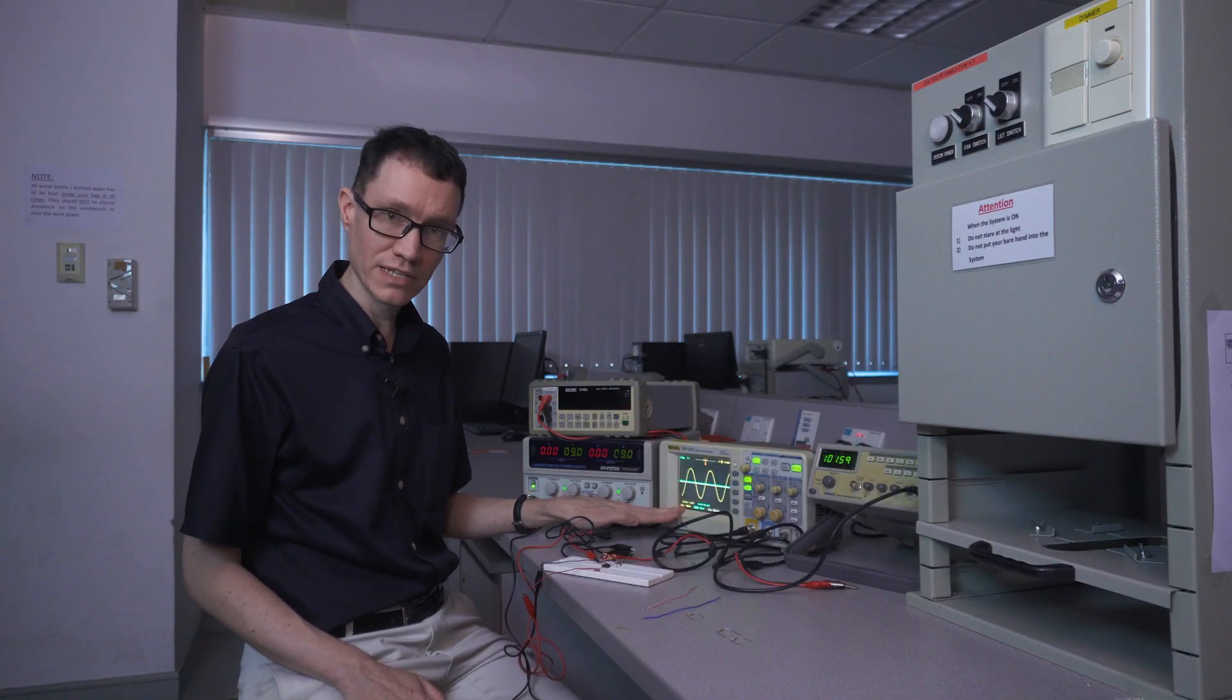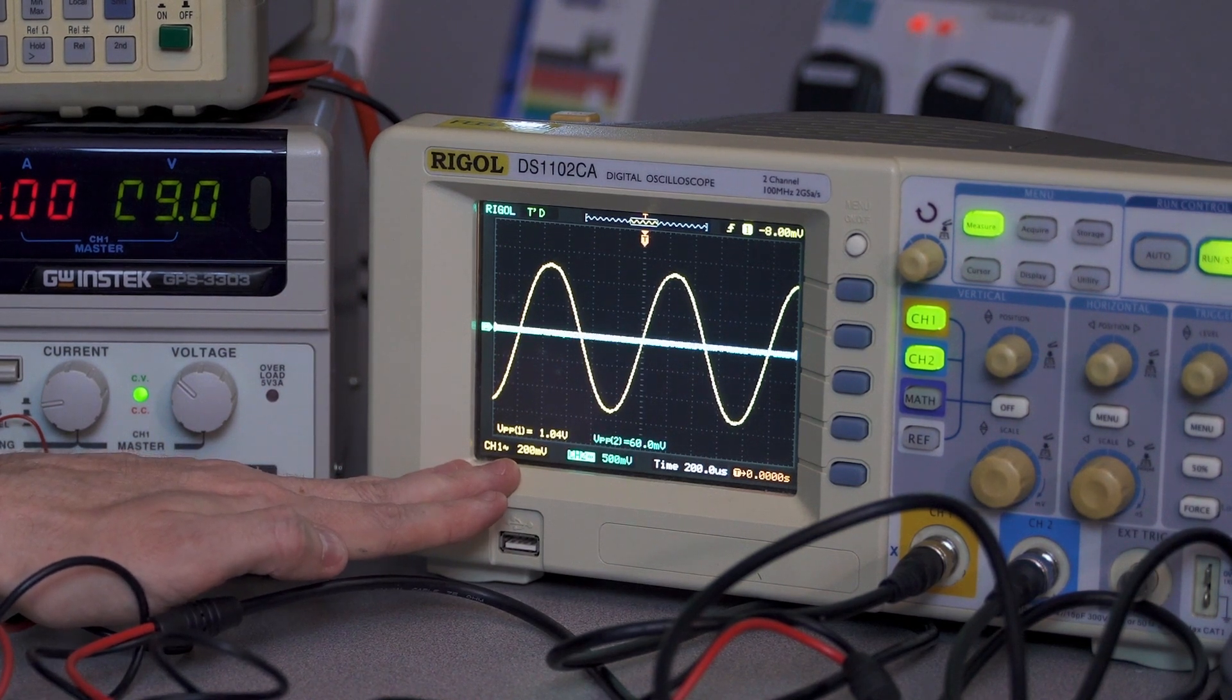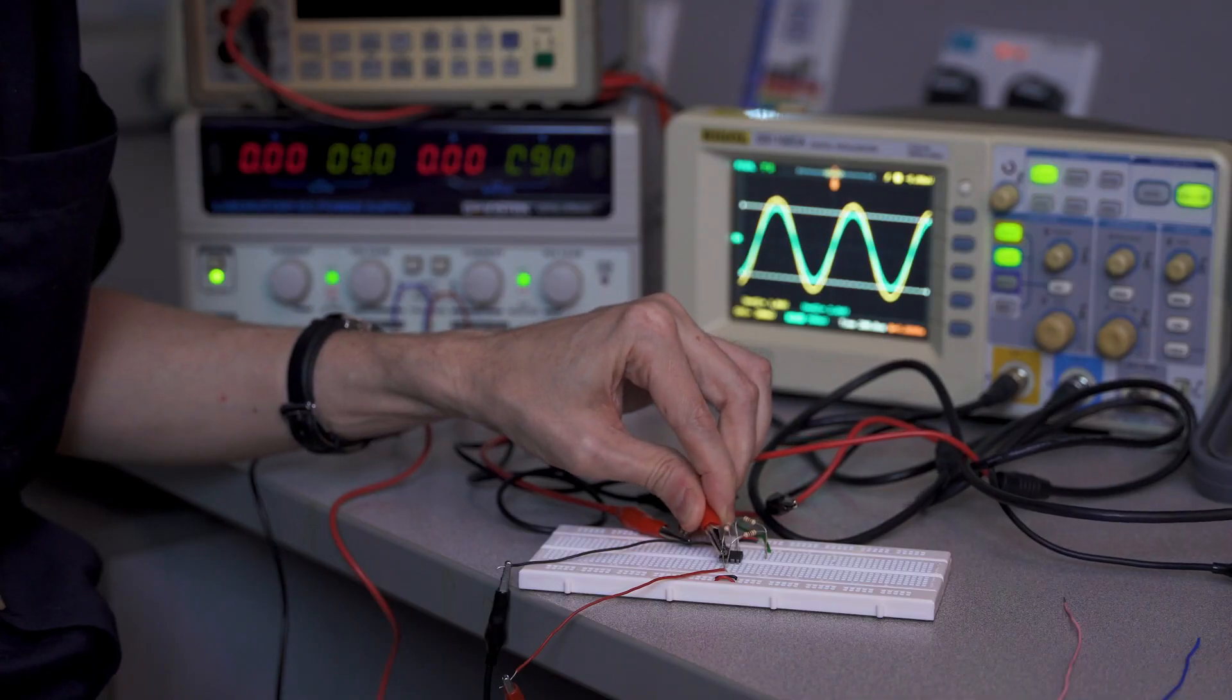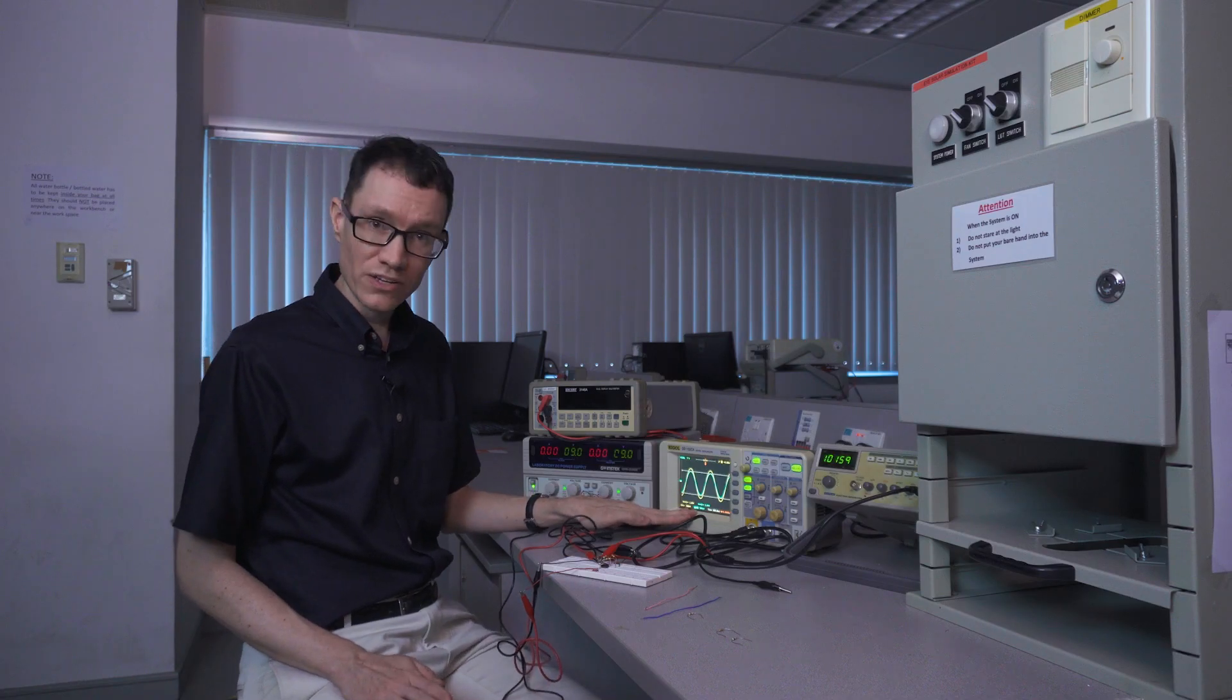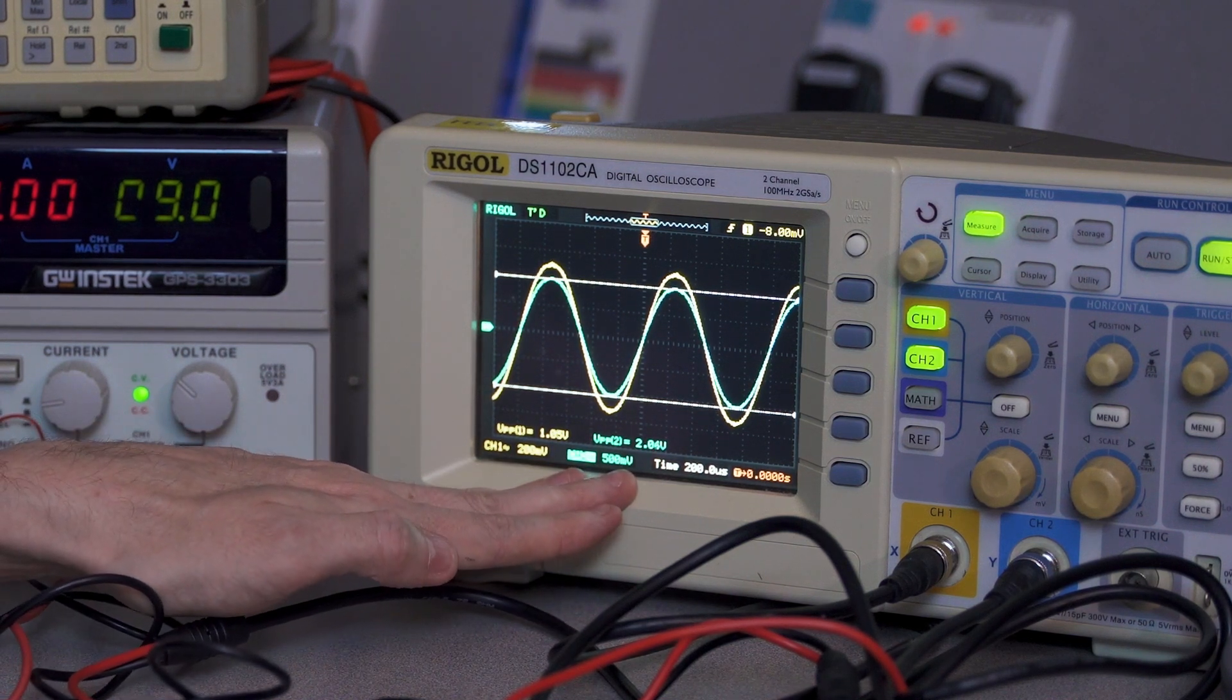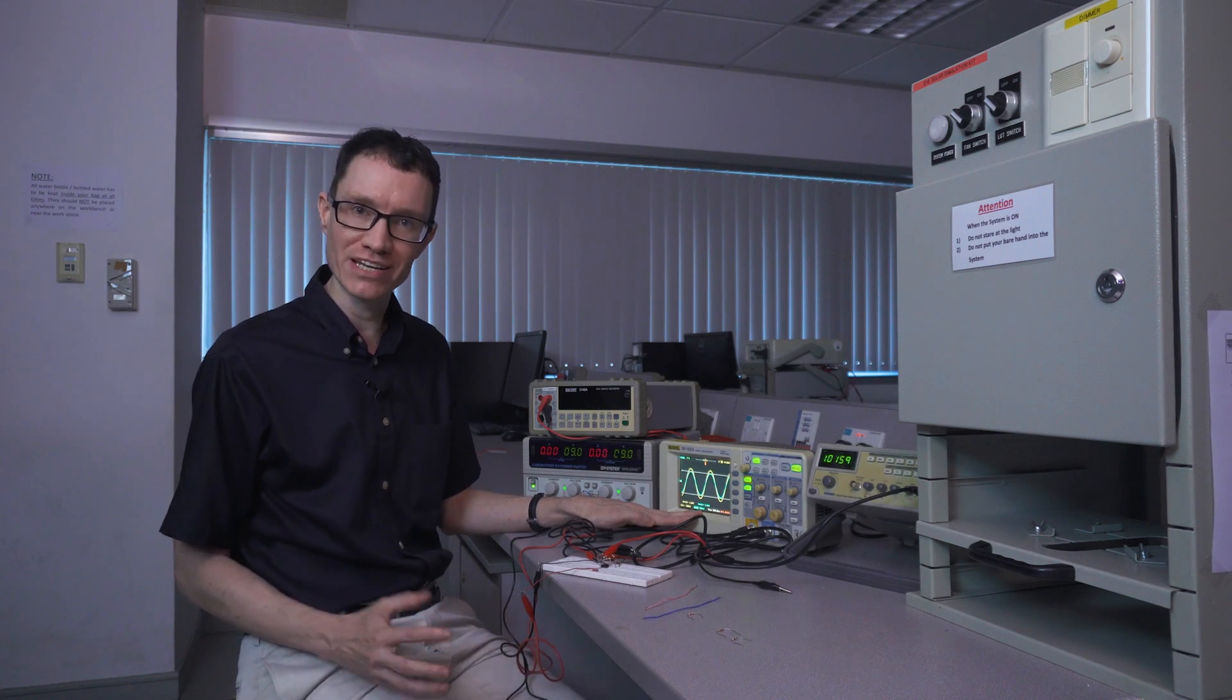I can confirm that we still have a 1 volt peak to peak signal at the input side. Let's use channel 2 to see what it looks like at the output side. With 1 kiloohm resistors, I can confirm that the output voltage is about 2 volts. This shows that we indeed have a voltage gain of 2.